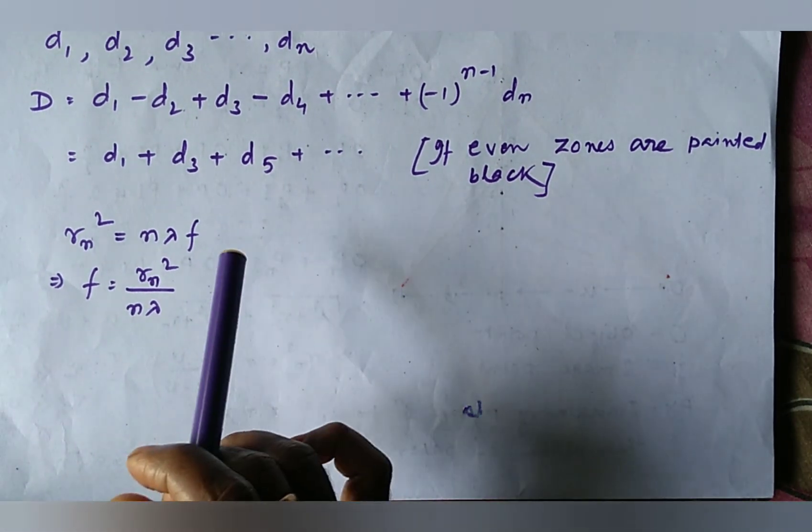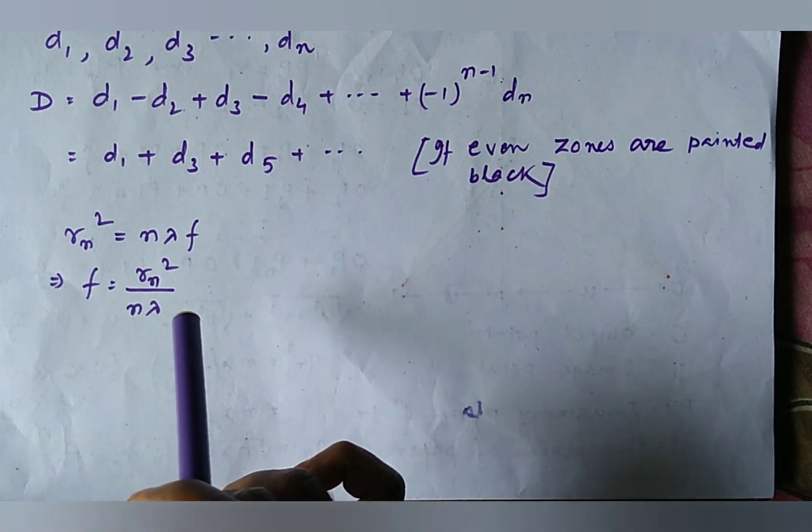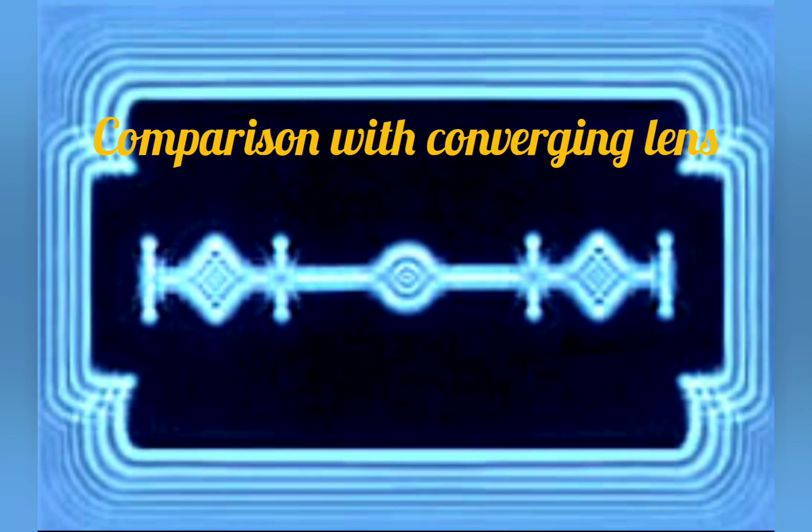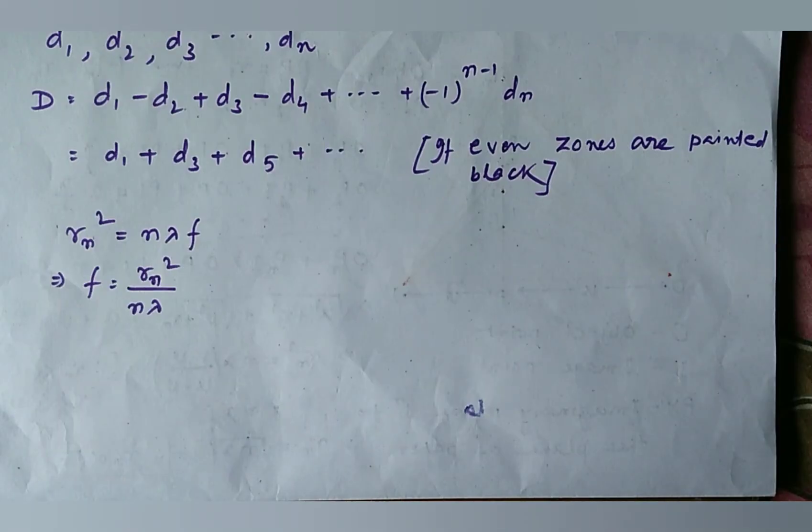Now we compare a zone plate with a converging lens. The function of a zone plate like a converging lens. That means, like a converging lens, a zone plate can produce a sharp image of an object point.